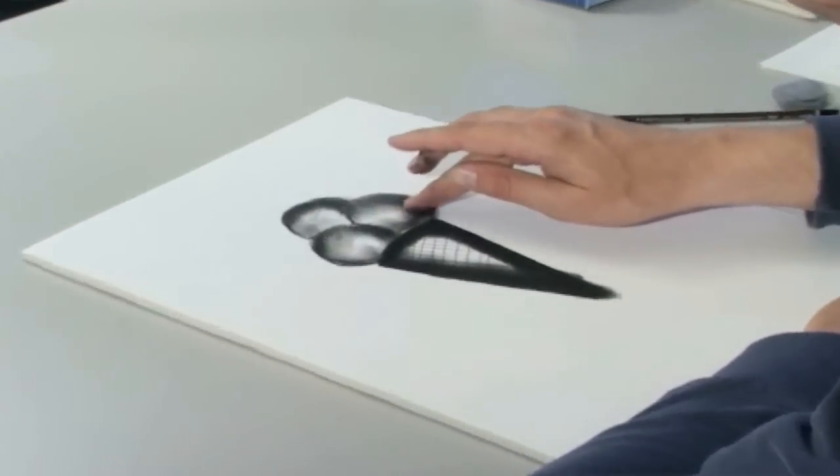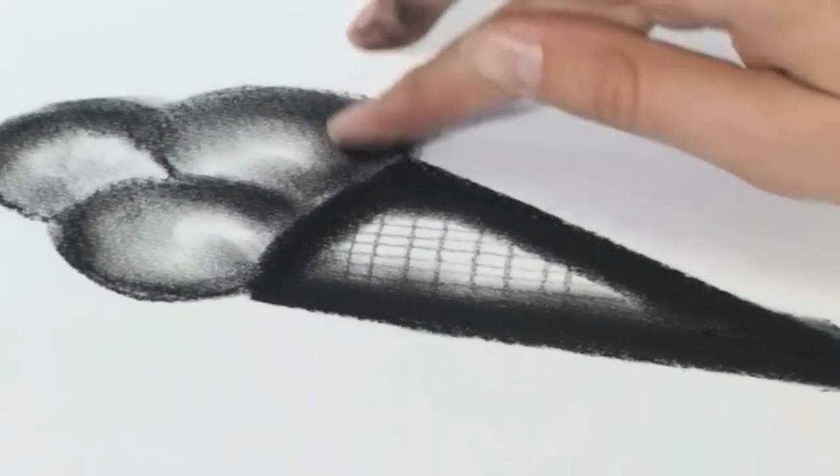Covering large areas can be achieved by smudging the lines, while fine lines are drawn using sharpened charcoal.